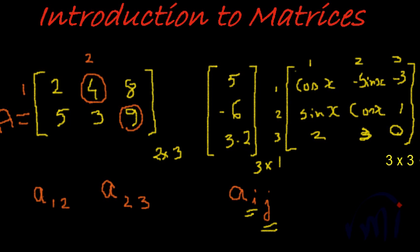If we have to say the generic representation of sin x, it would be A of 2 comma 1, because it is in the second row and first column.